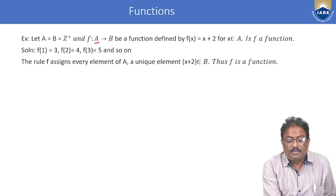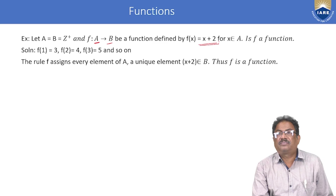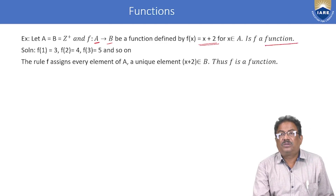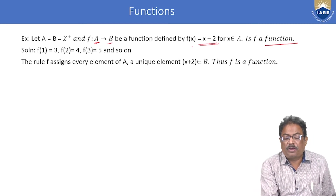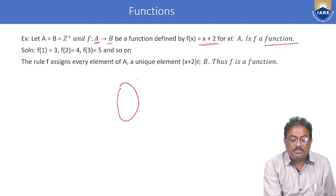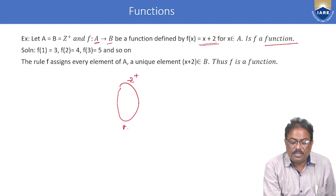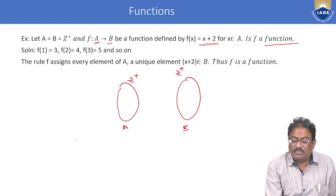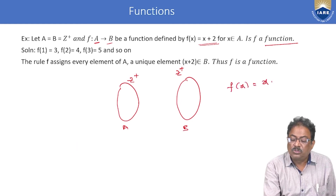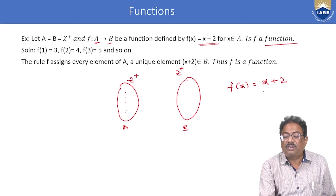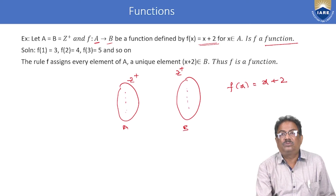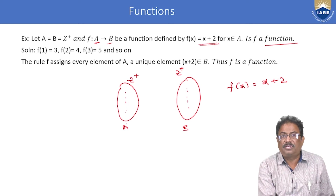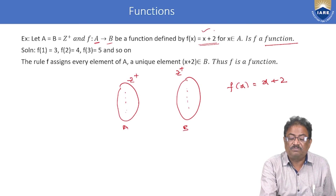Now consider A as the set of positive integers (Z⁺) and B also as Z⁺, with function f(x) = x + 2. Since we are taking positive values from A and adding 2, the result is always a positive integer, so each element of A has an image in B. Therefore, this is a function.